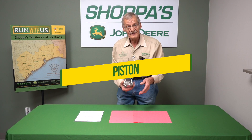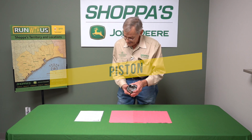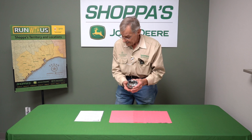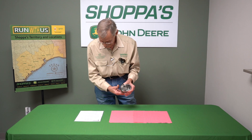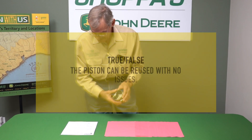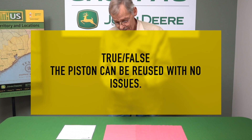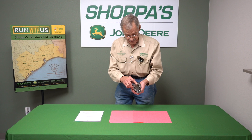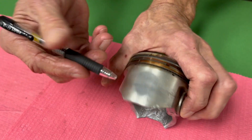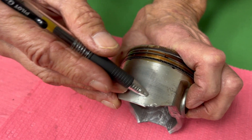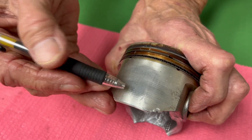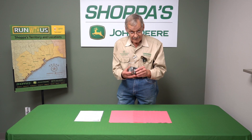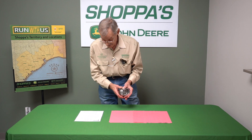Our next component is a piston. This piston has suffered miserably. The first statement: this piston can be reused with no issues. Well, not really — a portion of the skirt is broken, it does have light signs of galling, and so this piston is pretty well ruined. So that's false.